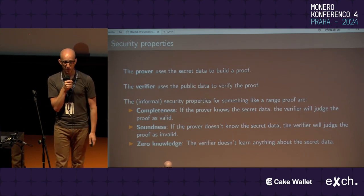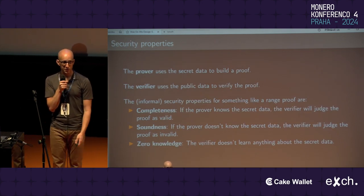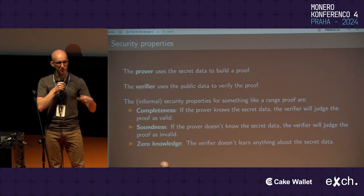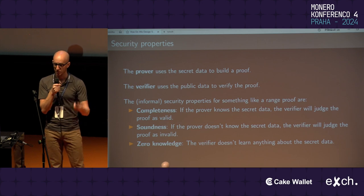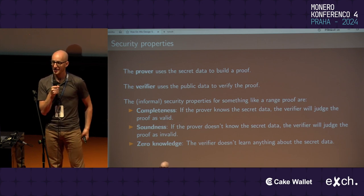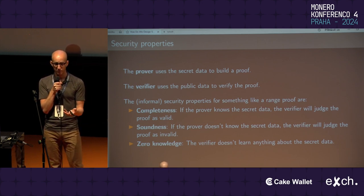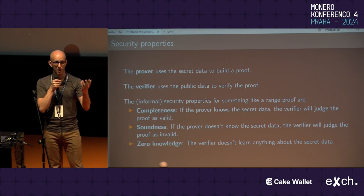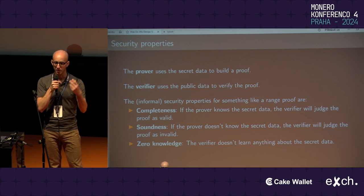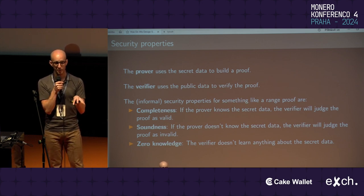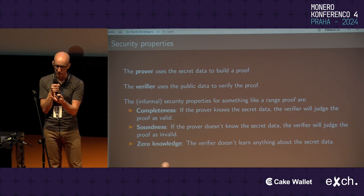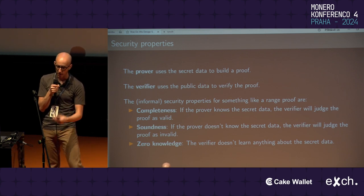We want to represent a range proof using what's called a proving relation — a general term describing how public and secret data in a proving system interact. For a range proof, the public data everyone sees is the commitment, and the secret data is the value and the mask used to generate it. The relationship between them is first that the commitment was produced using that value and mask, and second that the value secretly represented is within a valid non-negative range.